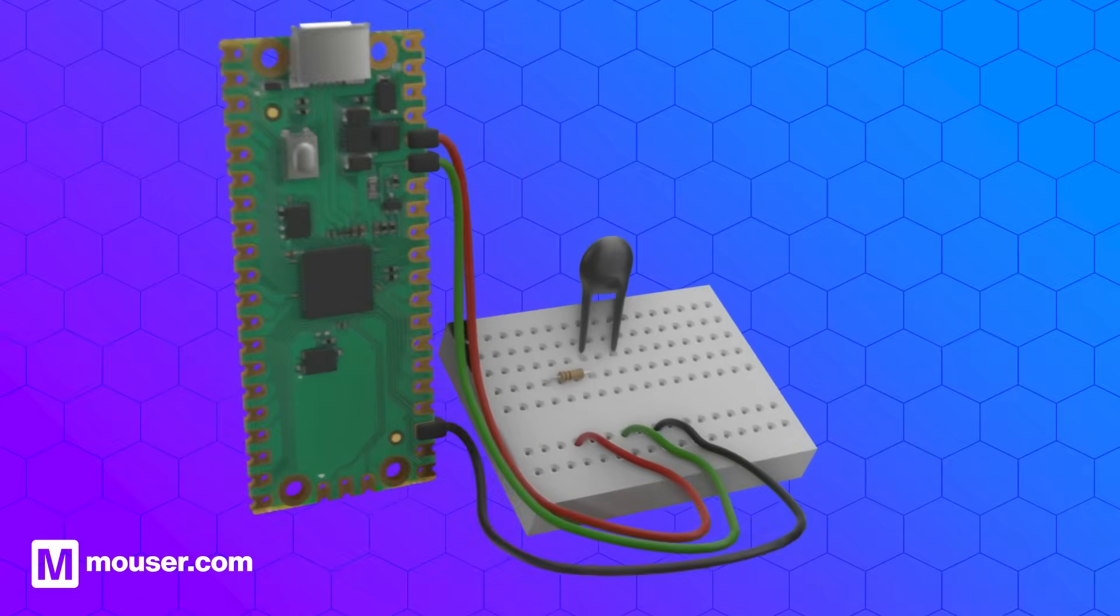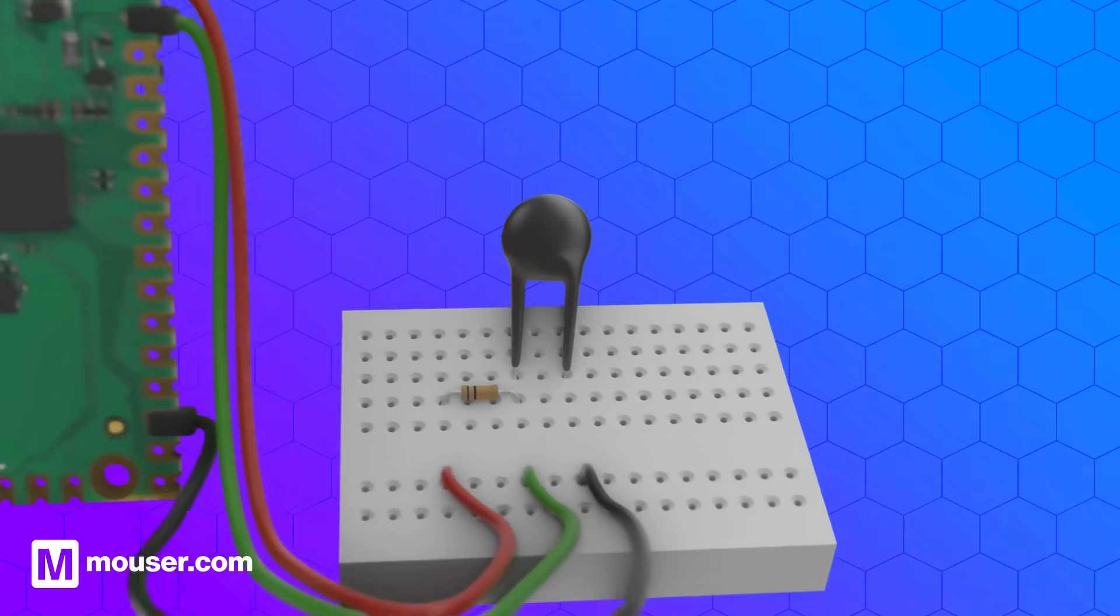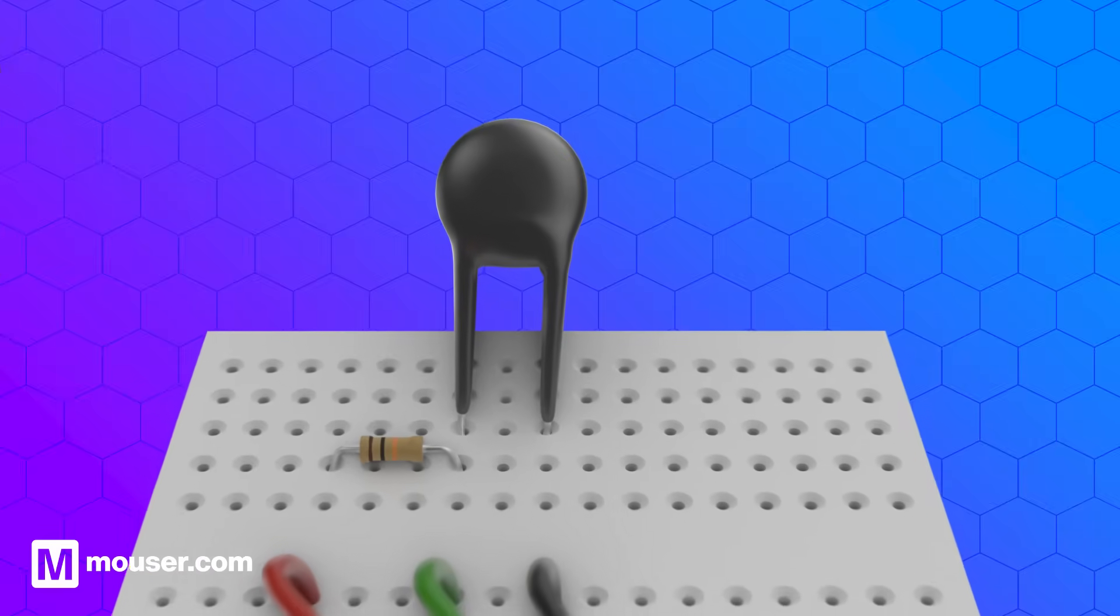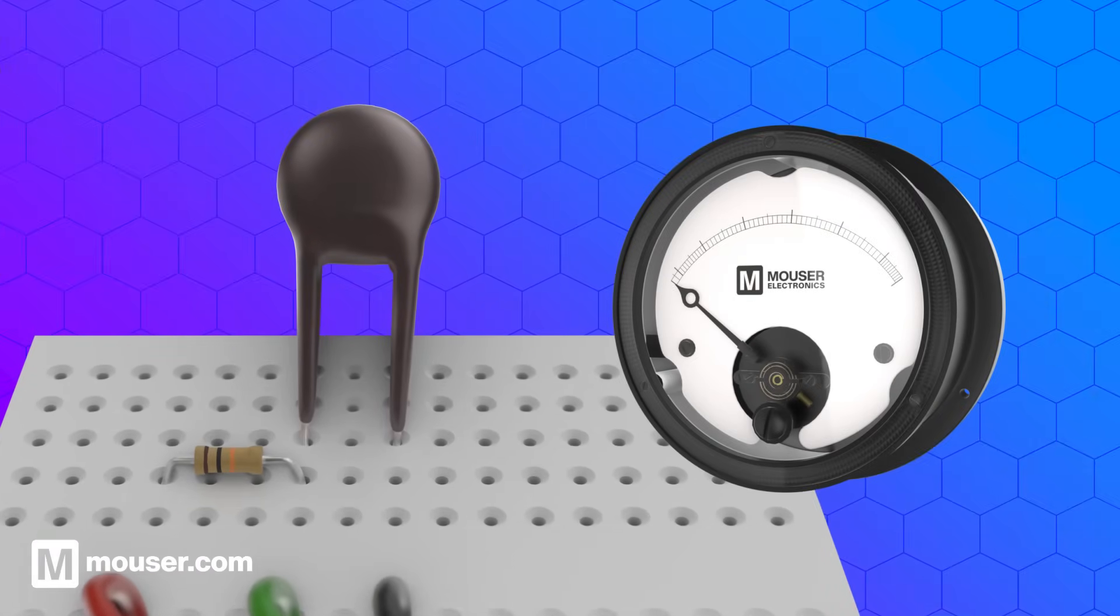Take a simple heat sensor for example. This circuit uses a thermistor, a resistor whose value changes with temperature, placed in a voltage divider with a fixed resistor. As temperature moves, the resistance of the thermistor changes, converting temperature change into voltage change that can be read and used by any connected system such as a microcontroller.